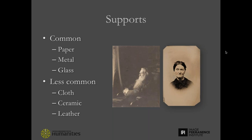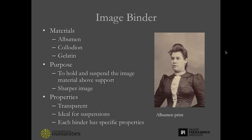The most common support is paper. 19th century photographs are also found on metal and glass. Less common, but definitely found in collections, are cloth supports, ceramic, and leather. The simplest photographic structure has just image material and a support. Some photographs have a binder, which is coated onto the substrate and holds the image material above the substrate, producing a sharper image.